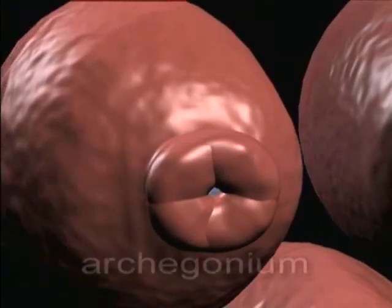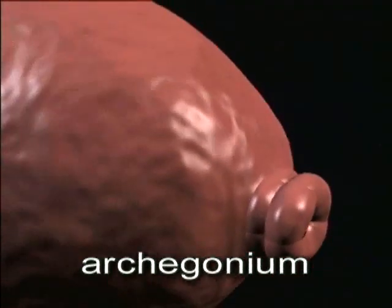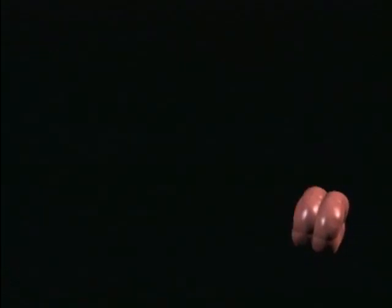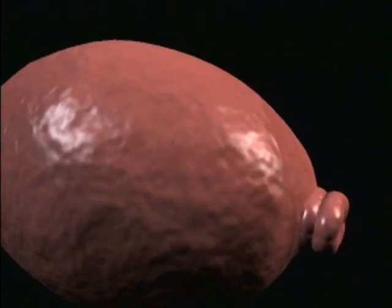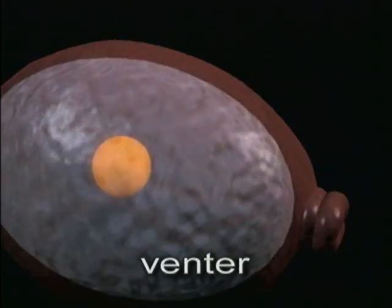Each of these lead down to an archegonium. At the entrance of an archegonium, there are several rings of neck cells. Inside, there is a large basal venter containing a single egg cell.